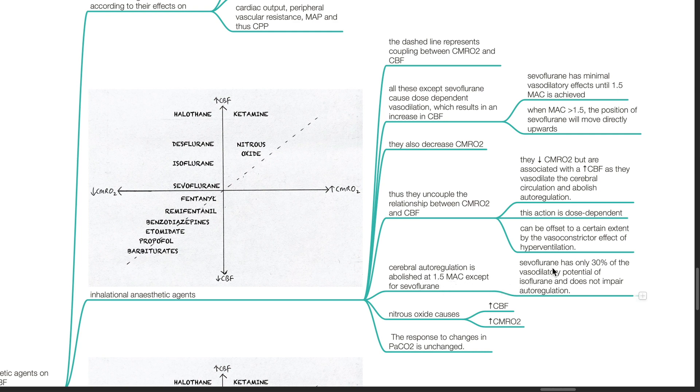Sevoflurane has only 30% of vasodilatory potential of isoflurane and does not impair autoregulation. Nitrous oxide causes an increase in CBF and CMRO2. The response to changes in PaCO2 is unchanged.